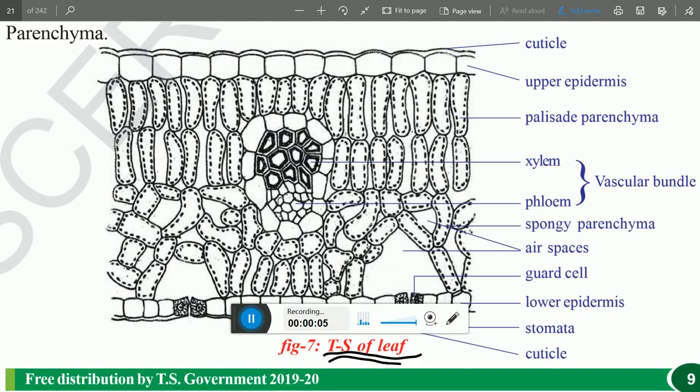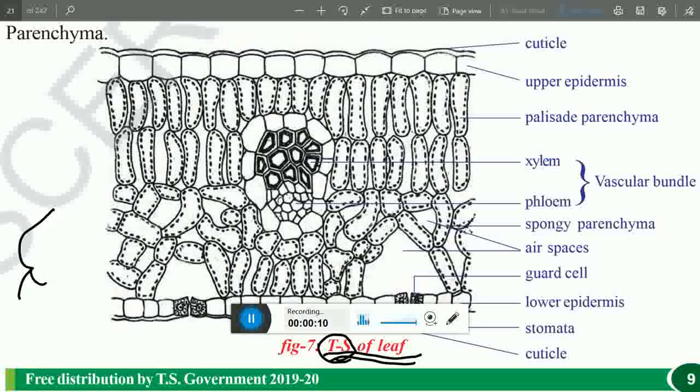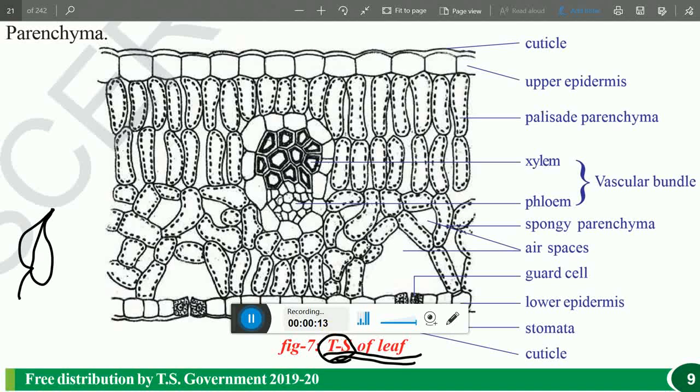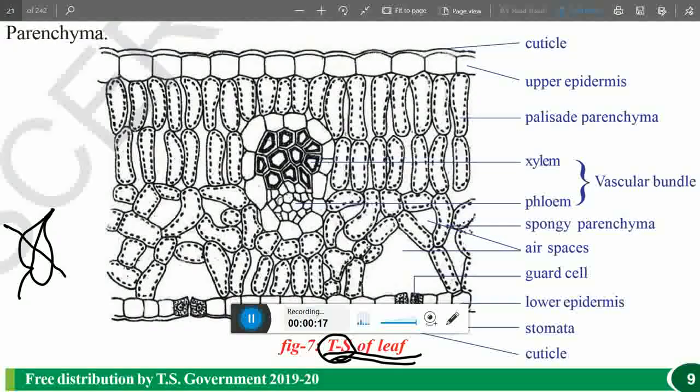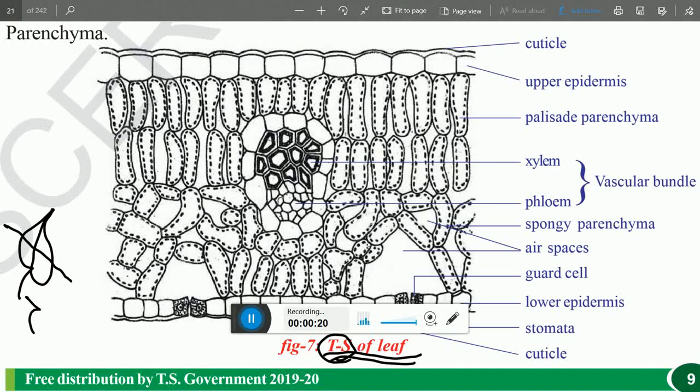So, T.S. of leaf - what is that? T.S. means transverse section of leaf. For example, if this is a leaf and if we cut this leaf transversely, it will appear like this.